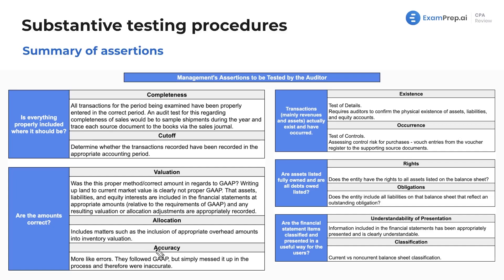Are the amounts correct? Starting from the bottom: accuracy relates to errors — management followed GAAP but simply messed up the process, resulting in inaccurate numbers. Allocation includes matters such as the inclusion of appropriate overhead amounts in inventory valuation — did you properly capitalize or expense what you should have? Valuation asks whether the proper method was used in regard to GAAP — did we actually follow GAAP? Writing up land to current market value, for example, is clearly not proper GAAP.